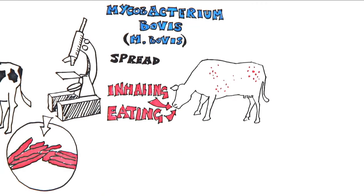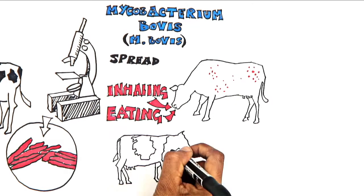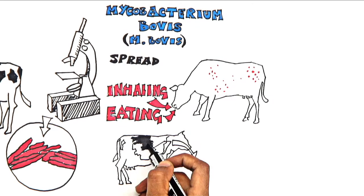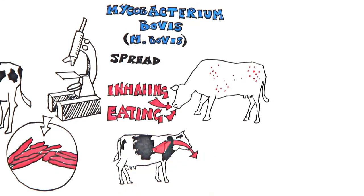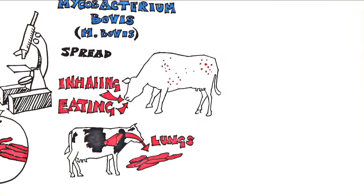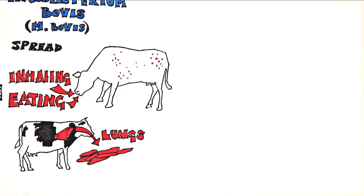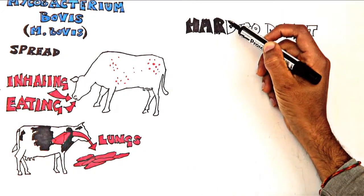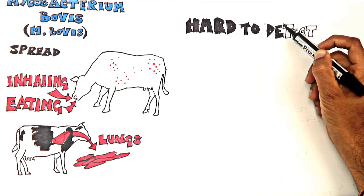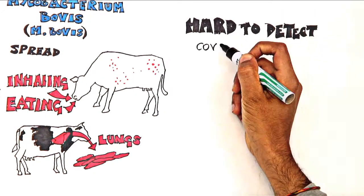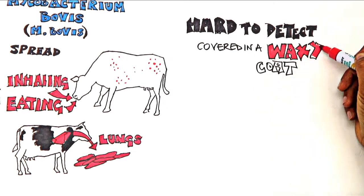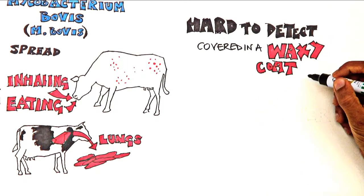This results in abscesses, such as in the lungs or other parts of the body, which in turn produce and spread more bacteria. However, the way in which the disease develops can vary. It can also be hard to detect at first because the bacteria itself is covered in a waxy coat and grows very slowly.